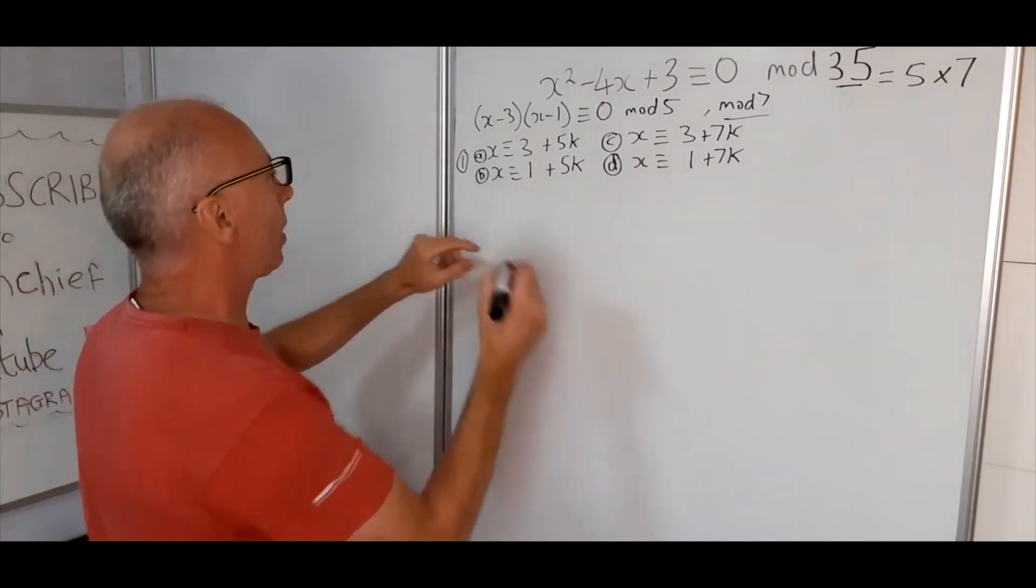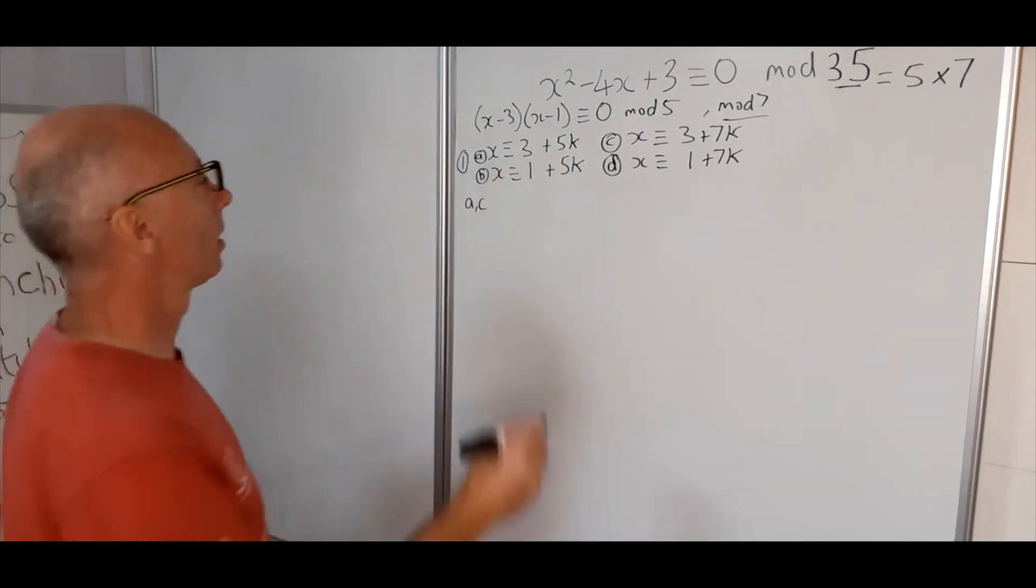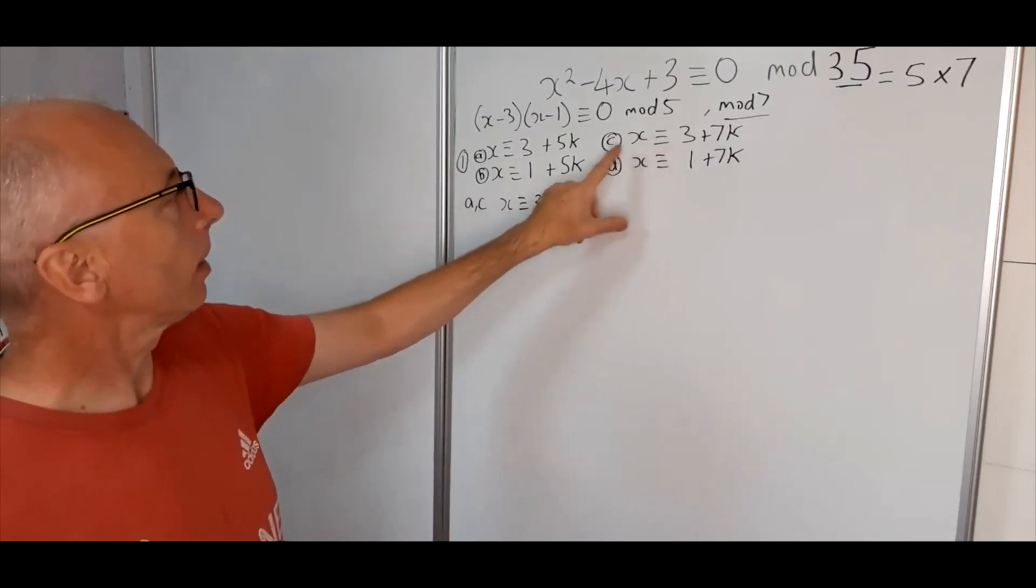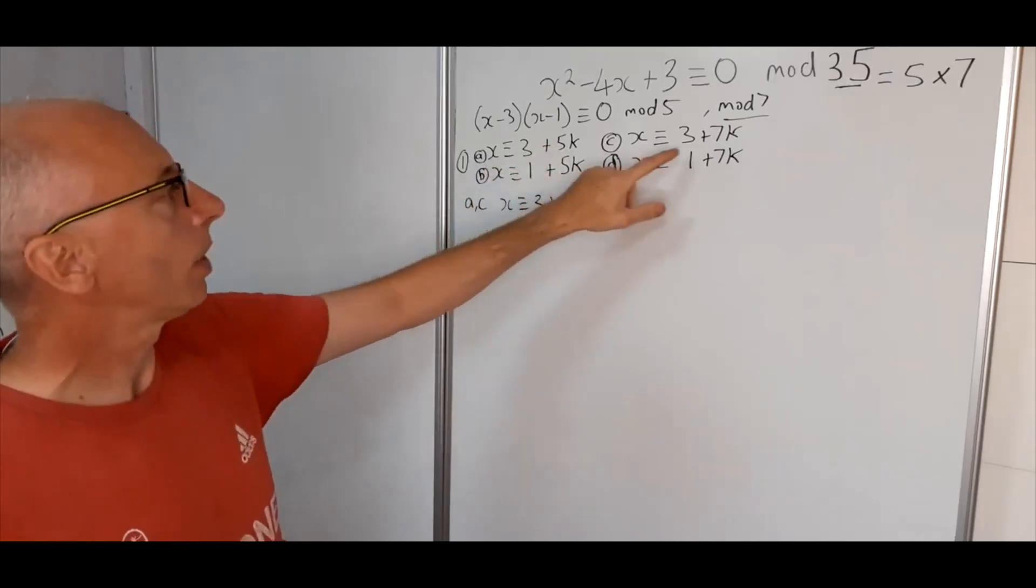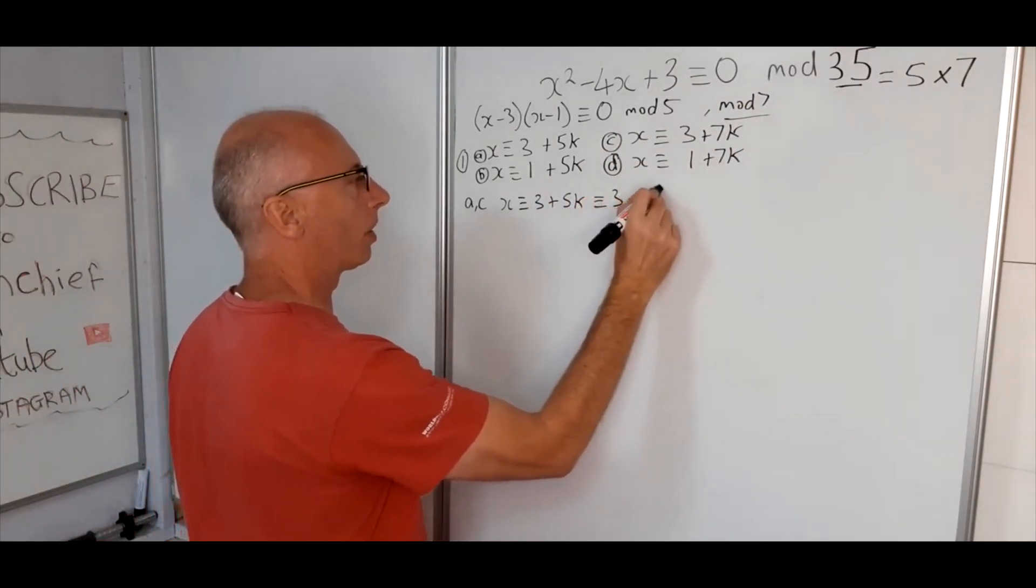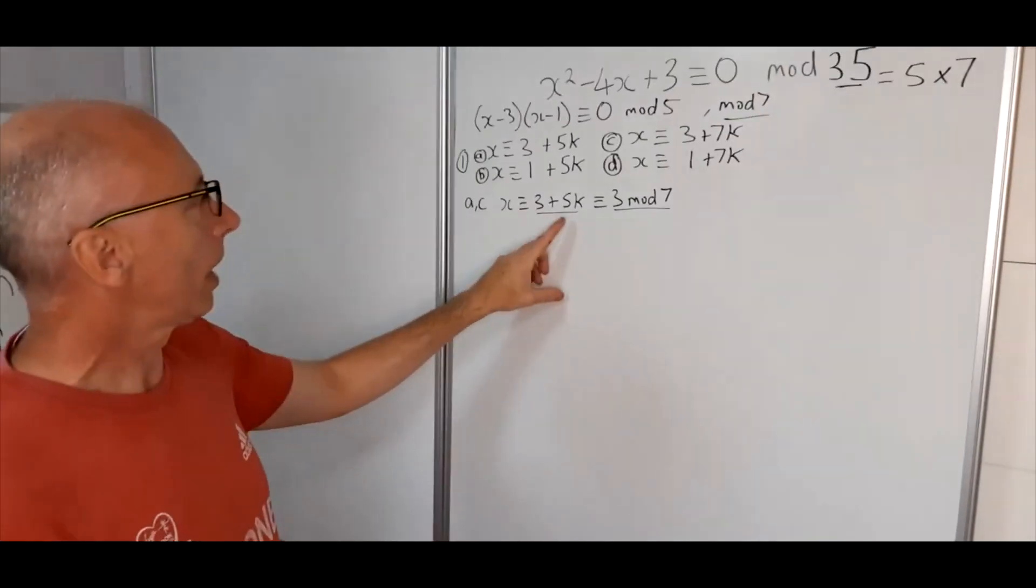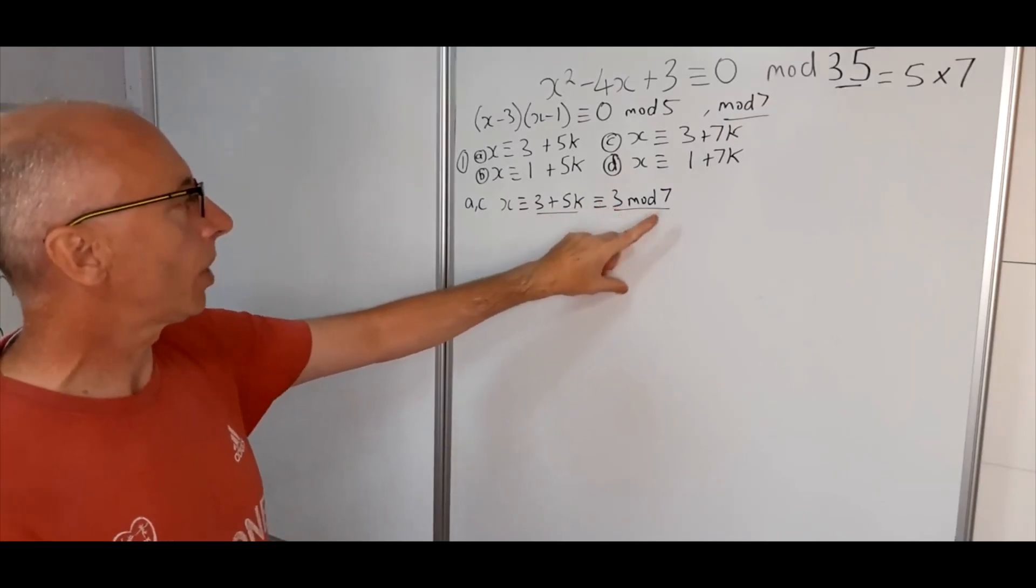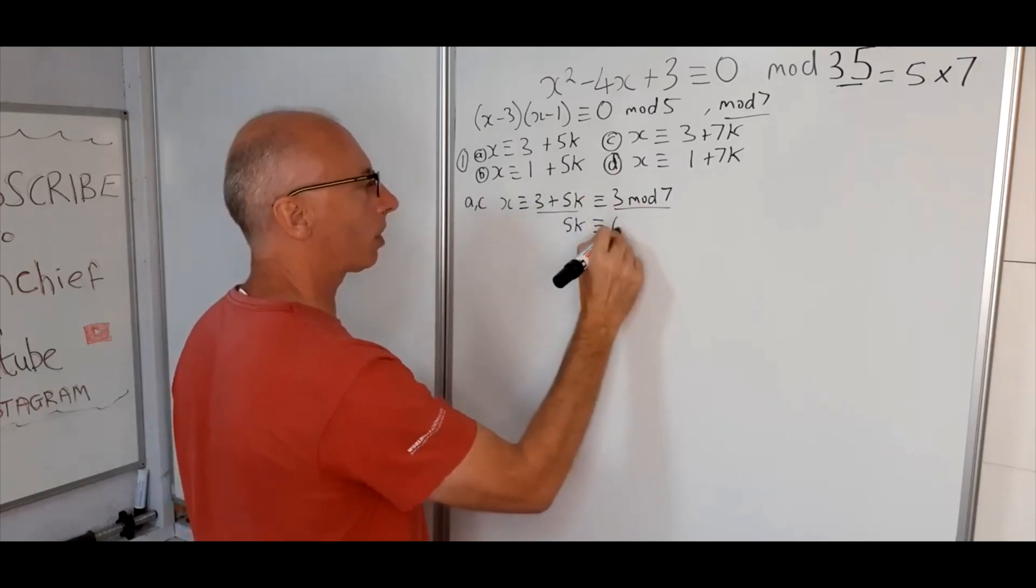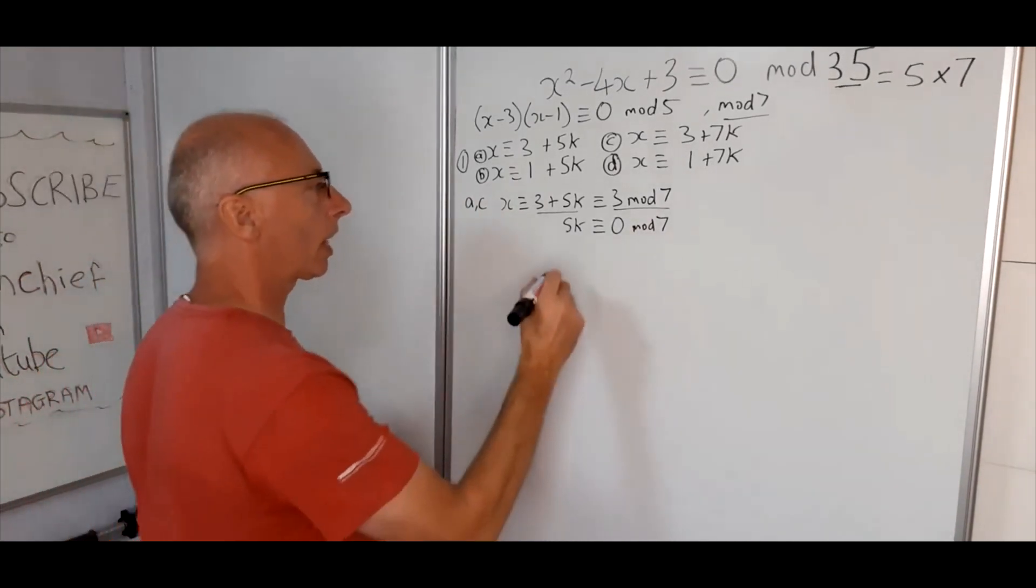So let's do A and C first. What we say here is that x is congruent to 3 plus 5k, and because we're going with C, we take this part for what x is equivalent to, but then we take the second part, so it's congruent with 3 mod 7. So now we're looking for to try and solve for k mod 7. We can subtract 3 on each side, so then we get 5k is congruent to 0 mod 7. Therefore k can be 0.